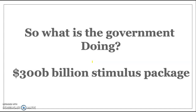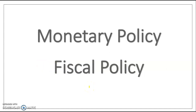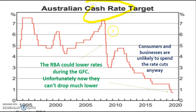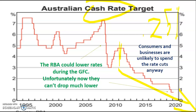The government has announced close to $300 billion in stimulus funding. There are two policy options: monetary policy and fiscal policy. Monetary policy involves lowering interest rates, but after nearly 10 years of cuts, rates are now at 0.25%, meaning the RBA has little room to stimulate further. During the GFC, interest rates were around 6%, giving them significant capacity to cut quickly — that same power no longer exists.